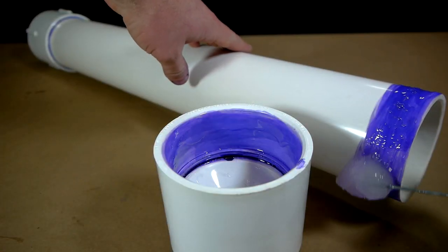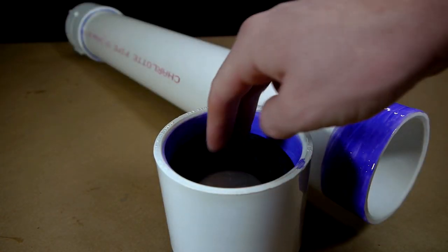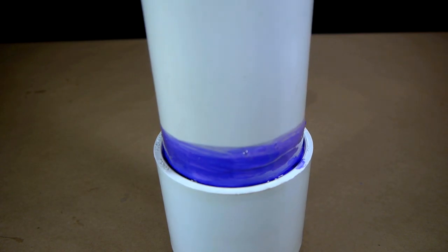The washer should be placed inside the coupling so it sits flat against the reducer, and the whole thing can now be glued to the chamber where it belongs.